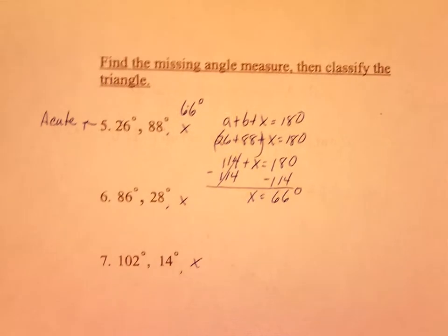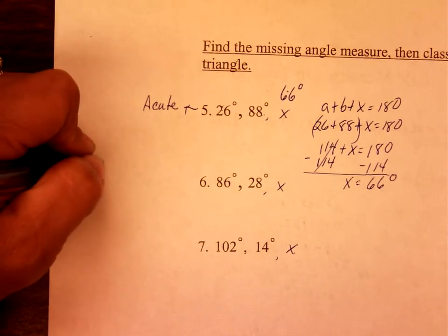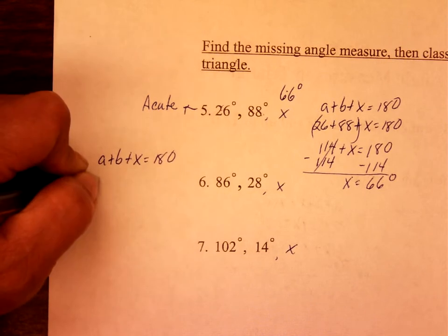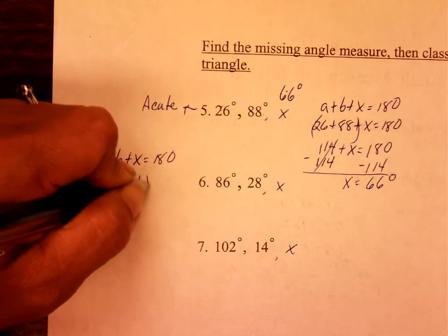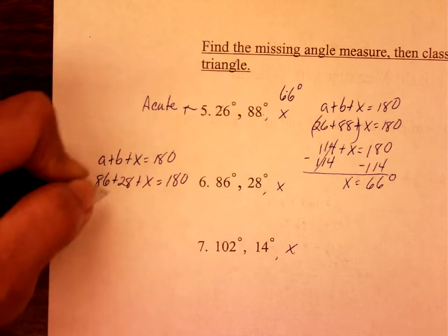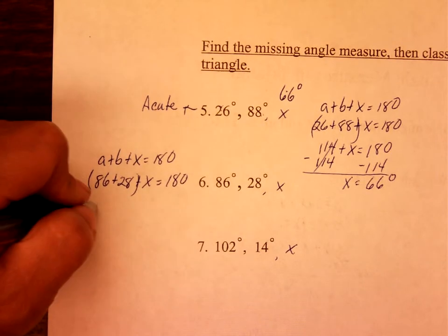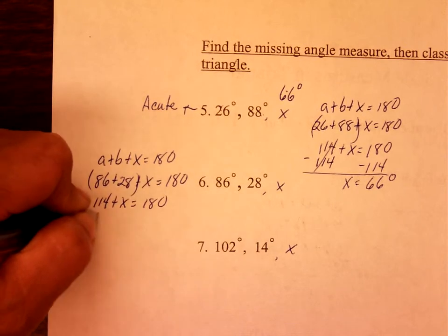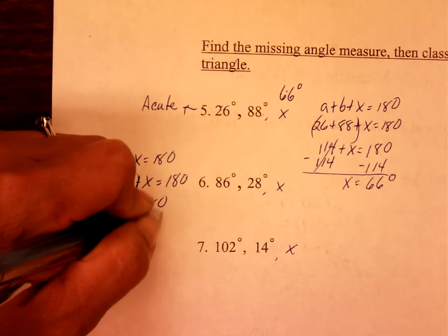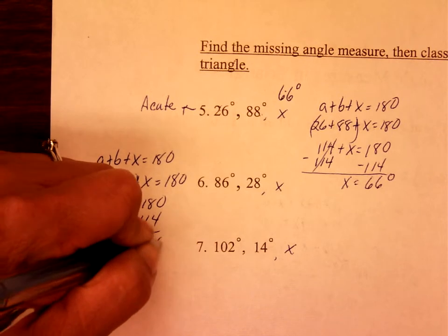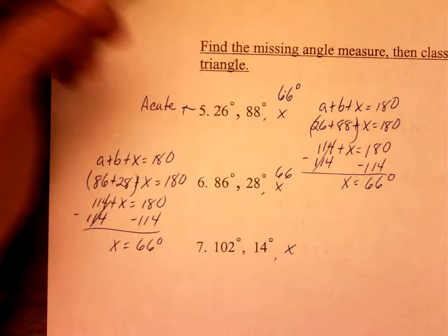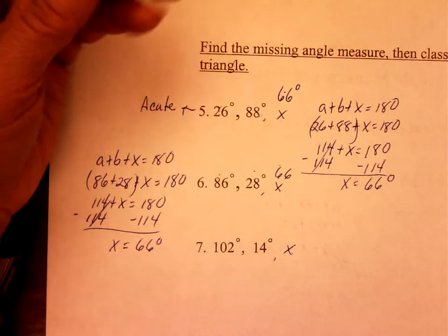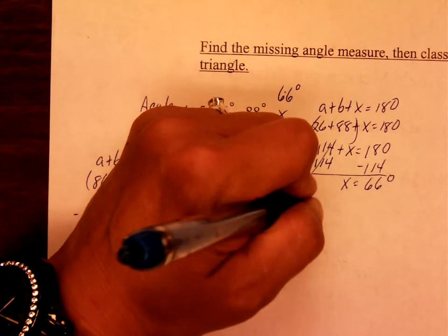Number 6: a plus b plus x is equal to 180. 86 plus 28 plus x is equal to 180. Add 86 plus 28 and you get 114 plus x is equal to 180. Subtract 114 on both sides, and x is equal to 66 degrees. Now look: 86 is less than 90, 28 is less than 90, 66 is less than 90, so that means this triangle is an acute triangle.